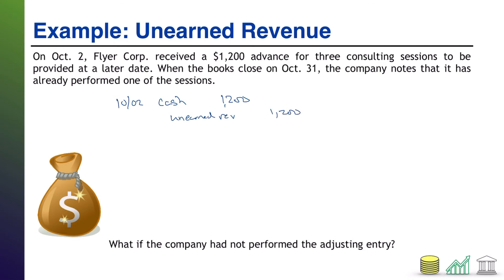Notice we didn't specify how much each service is worth specifically, so we can just assume that they are equal: $1,200 divided by three services equals $400 each. That's an assumption because we weren't given anything to say otherwise.